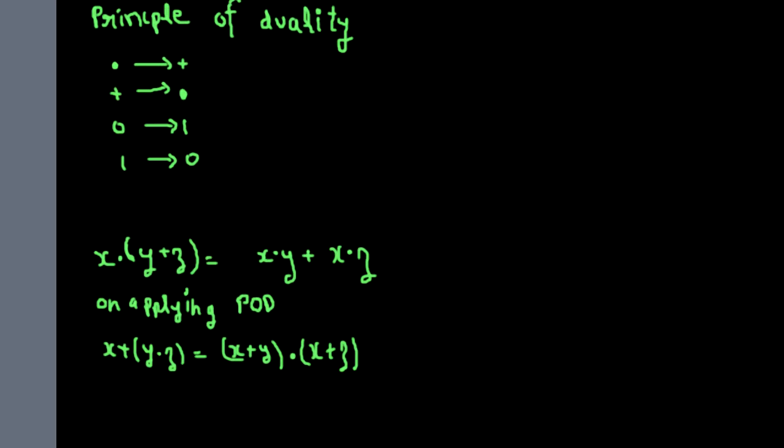You can take another example: x·0 = 0. If you apply principle of duality to this, you get x+1 = 1. You have studied these under the property of 0 and 1.